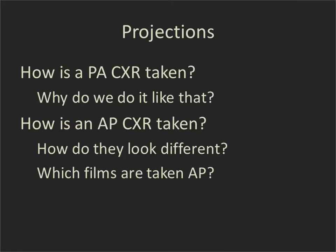Let's talk briefly about the standard projections for a chest x-ray. How is a PA — posterior-anterior — chest x-ray taken, and why do we even do it as posterior-anterior? How do we take an AP and how are they going to look different? Which films are taken anterior-posterior?